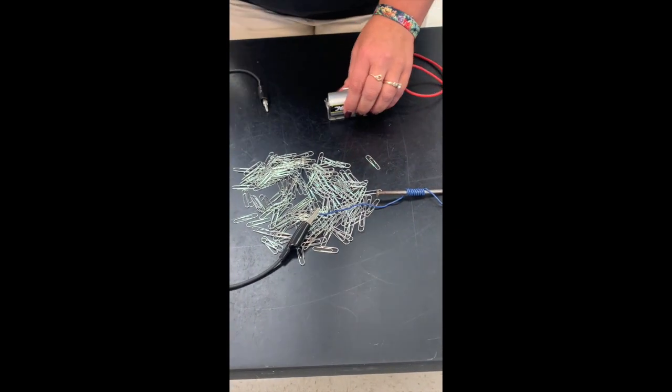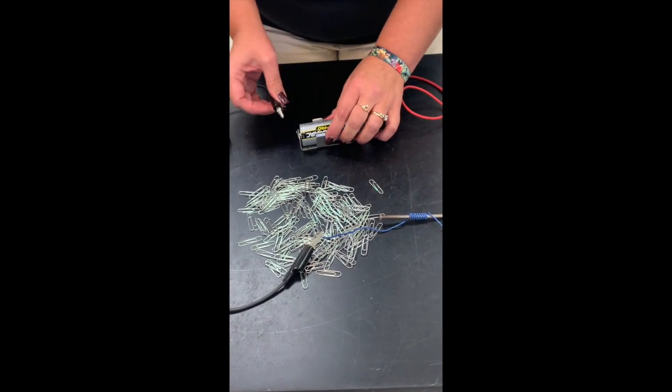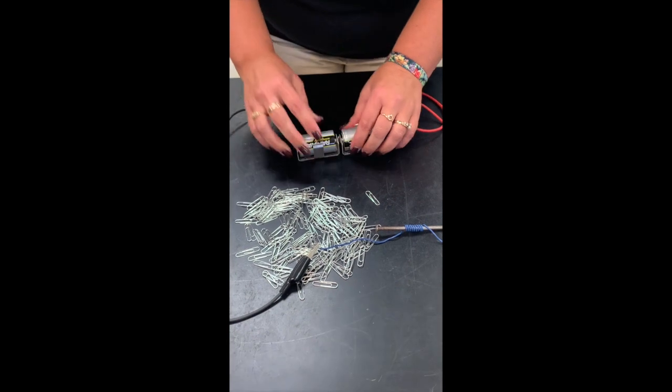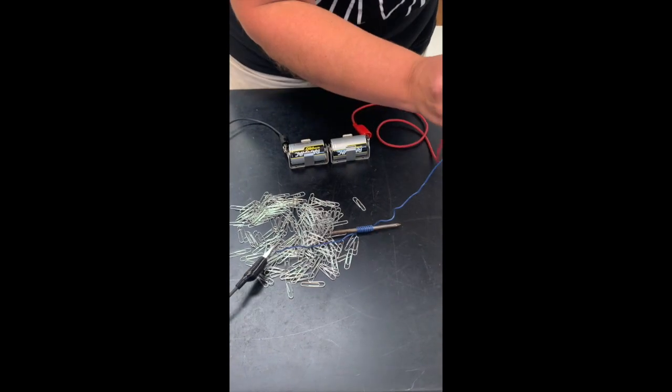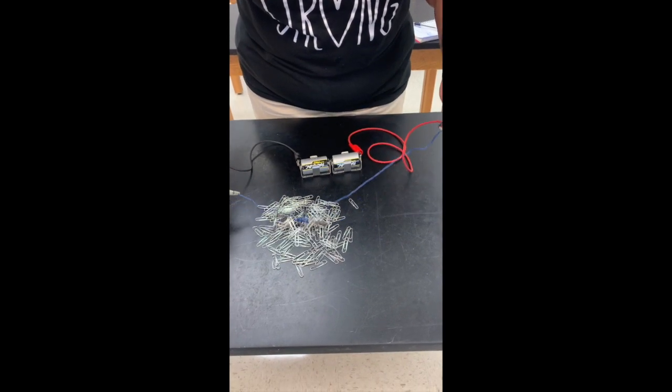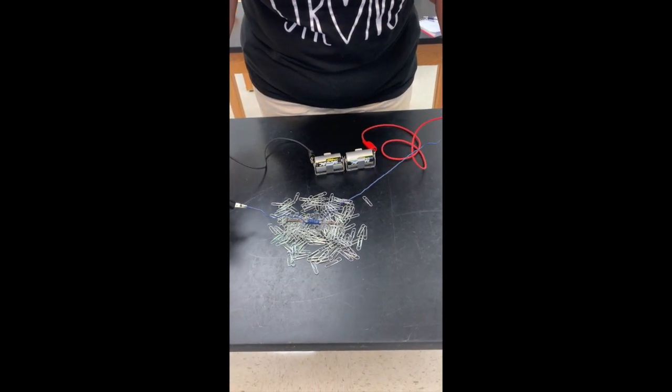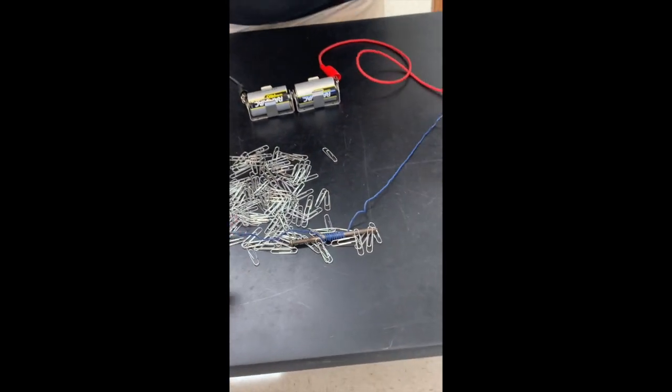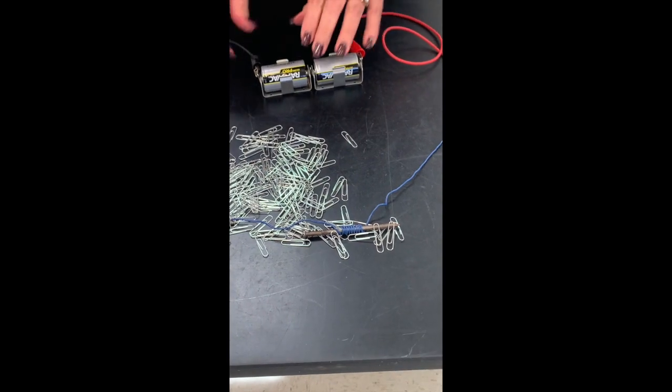So I'm going to increase my voltage which is increasing my current. I'm going to add 1.5 volts more. I'm going to close my circuit and then you see that now it's starting to pick up a few more paper clips. So that was keeping my wraps the same but increasing the voltage.